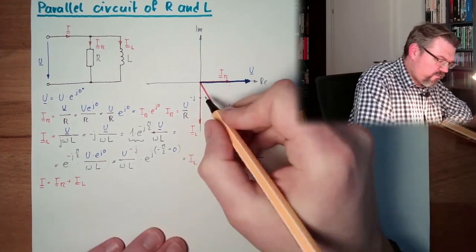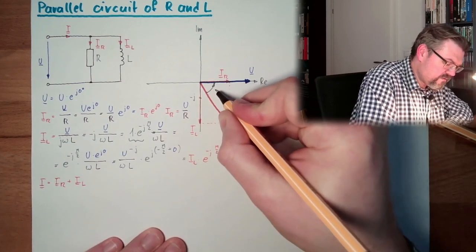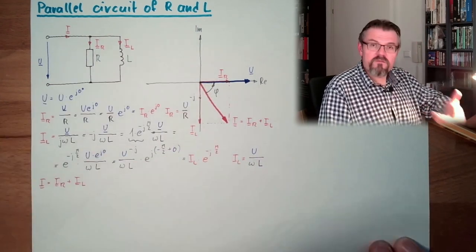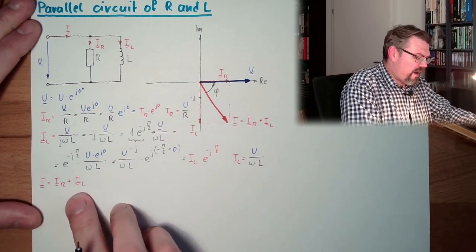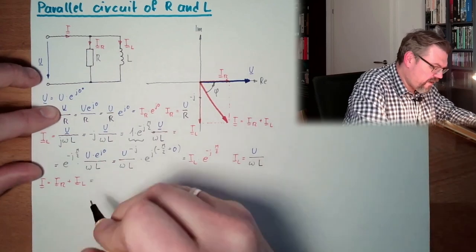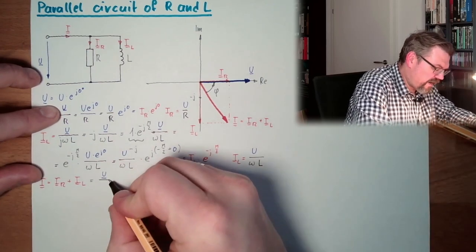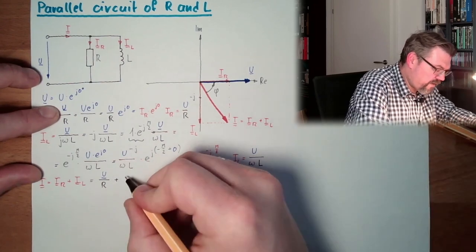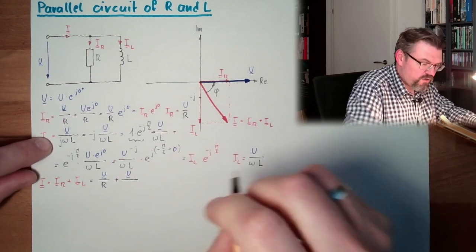And here from I to U, I have a phase phi. This is positive, turning to left, mathematically positive. I, IR. Let's see what is the result of this. Here, U divided by R, this is IR.